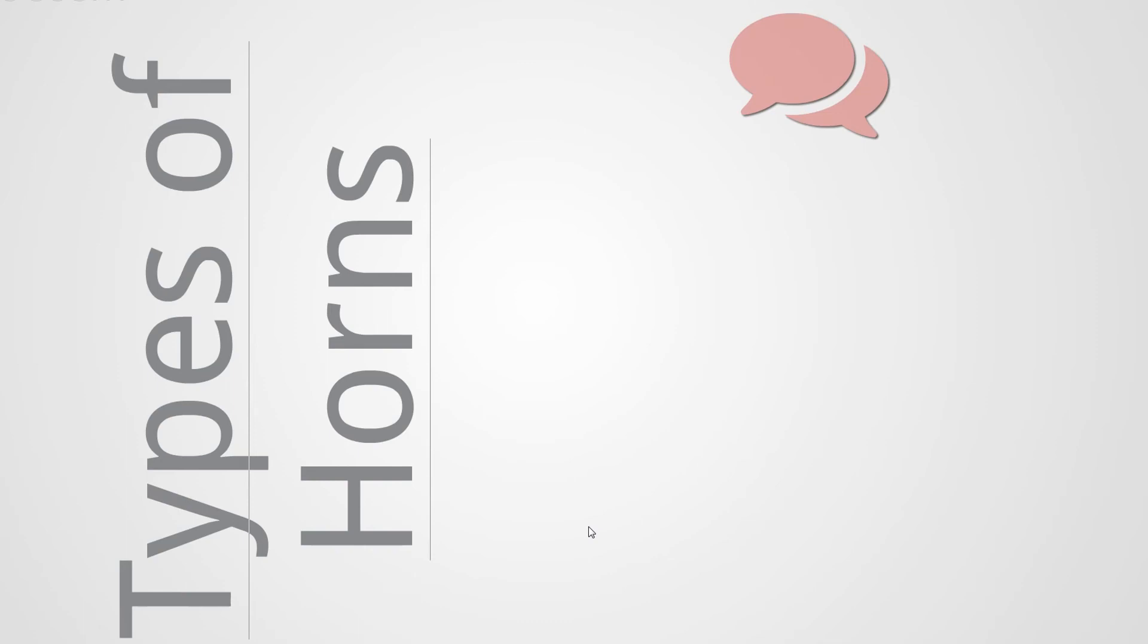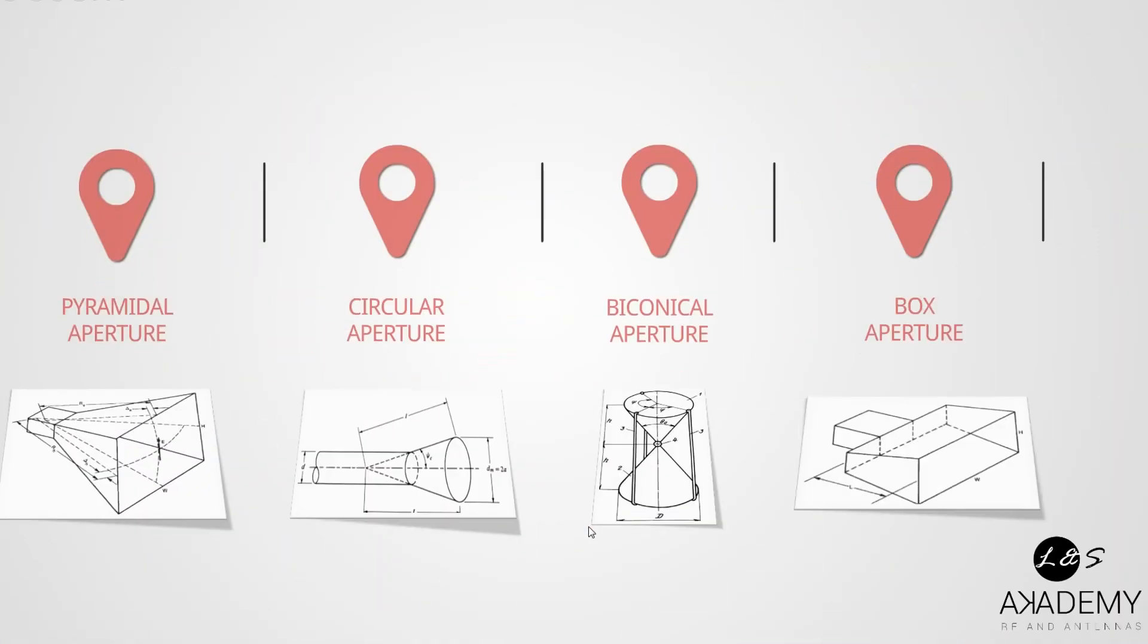Okay, next. Here we got four main typical horn antennas. The classification is what you see, and here we got: pyramidal aperture, circular aperture, biconical aperture, and box aperture. So starting from the left, we got pyramidal. The figure is over there, and this is the most widely used horn, the one which is flared in both directions. Then we got the circular aperture.